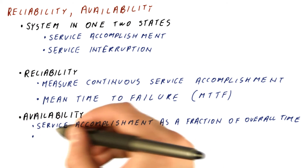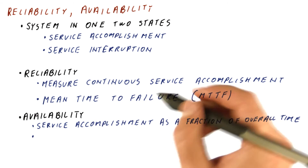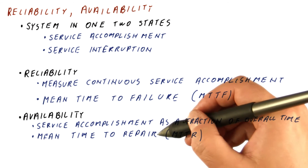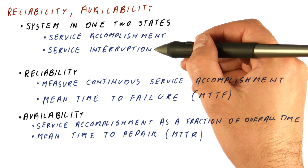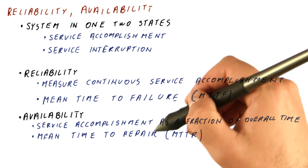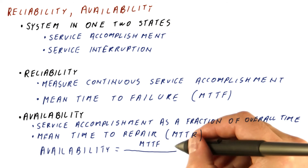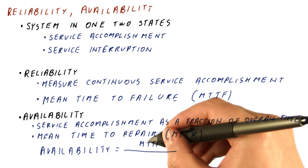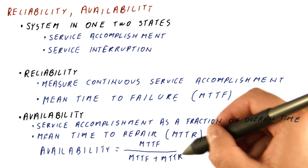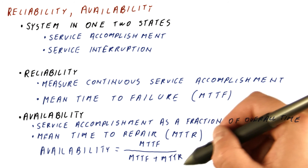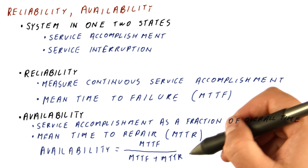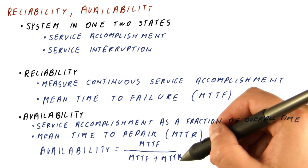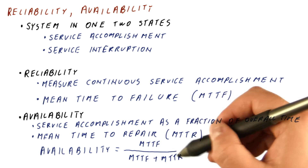So for availability, in addition to the mean time to failure, we need to know the mean time to repair, or MTTR. This is how long a service interruption lasts until the system goes back to the service accomplishment state. Availability is then the mean time to failure — how long it functioned properly — divided by the overall time, which is the mean time to failure plus the mean time to repair. After that, you're back in the accomplishment state. So the denominator covers both service accomplishment and service interruption, while the numerator is just the service accomplishment.